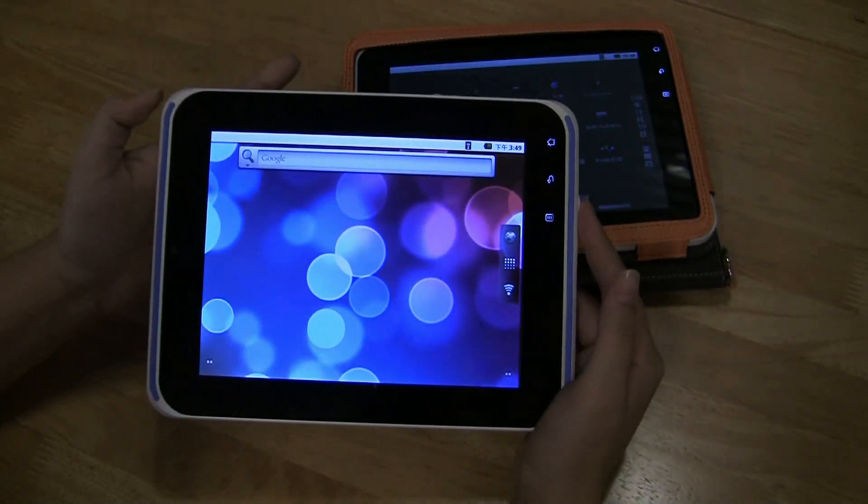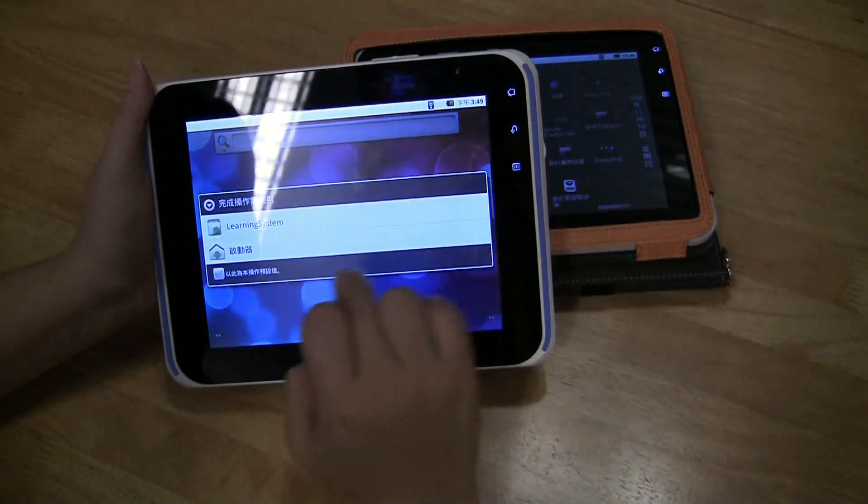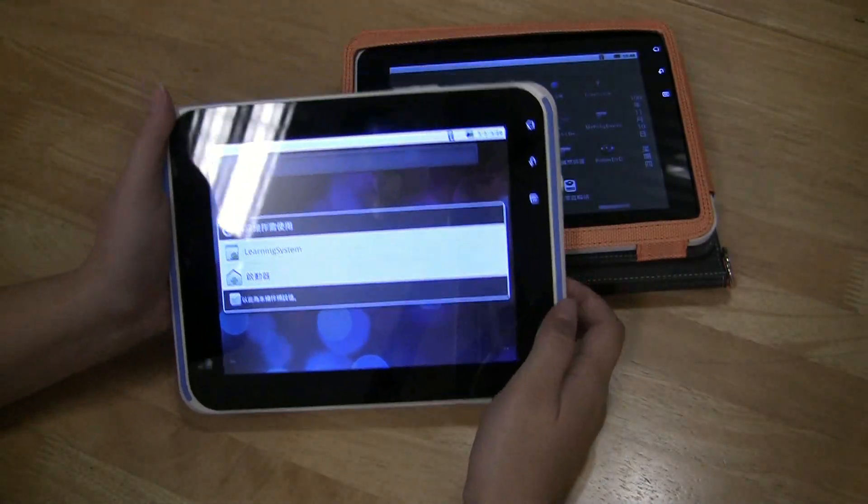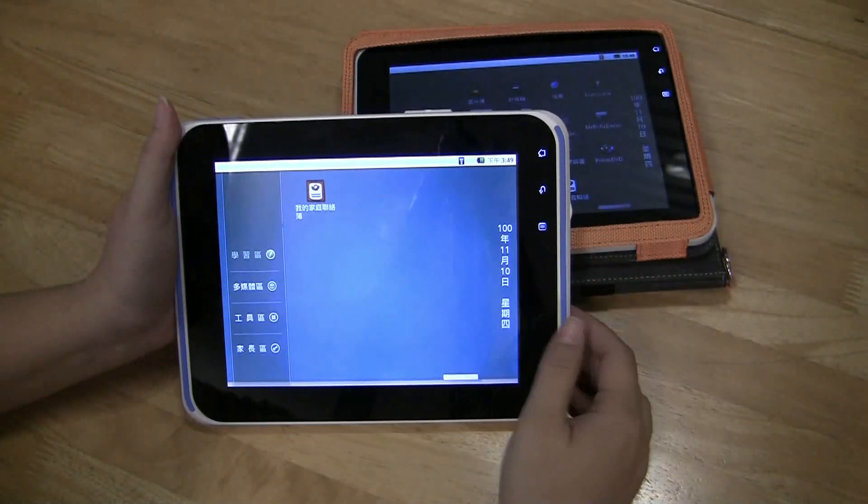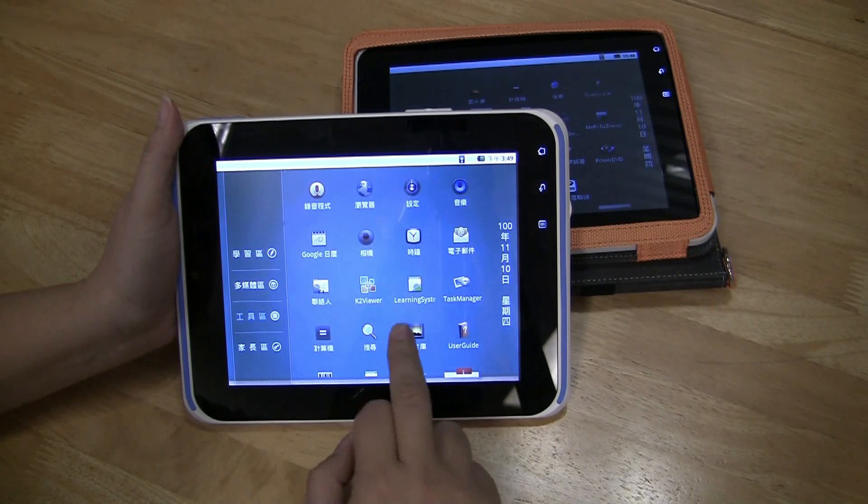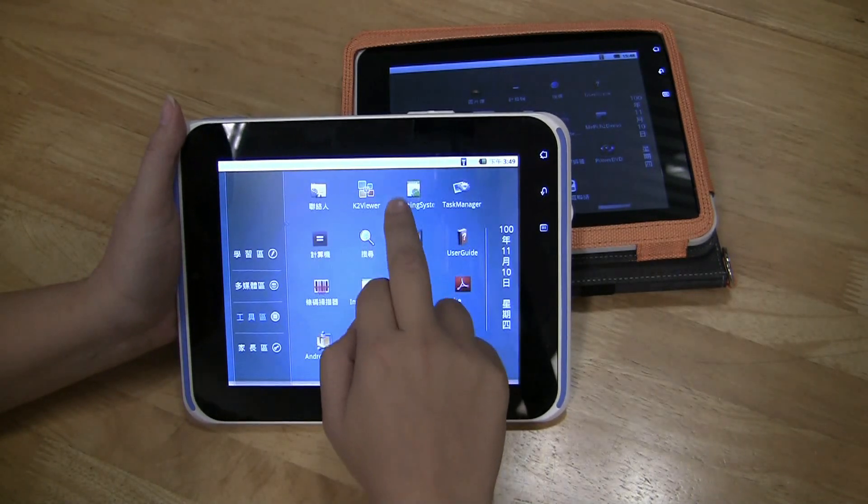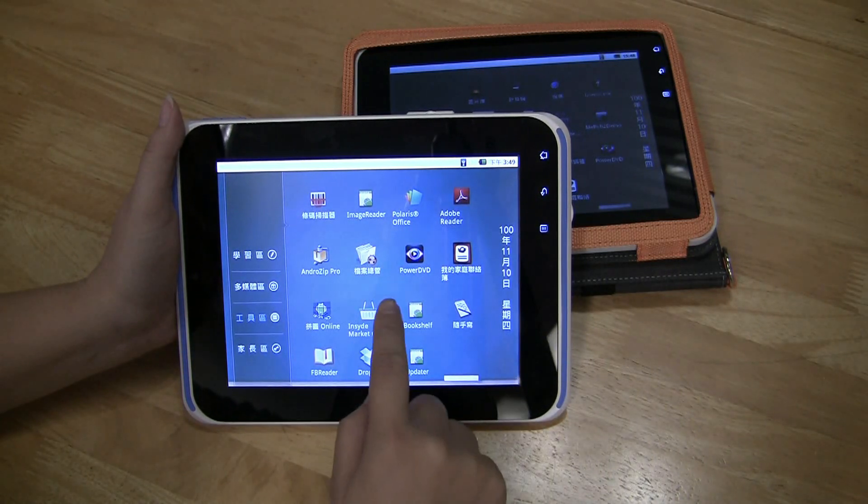They have made some really interesting things. You can see that it's running on Android 2.2, but they've actually done a front end specifically for education. You can see you can roll through all the apps right here. We have a couple of familiar ones like Polaris Office.